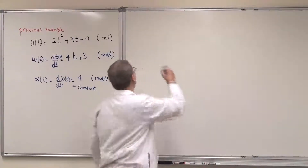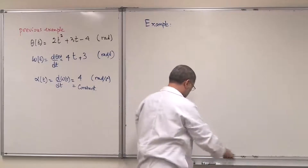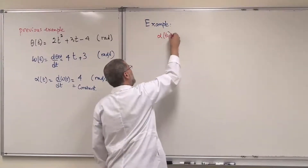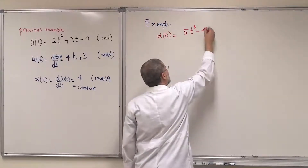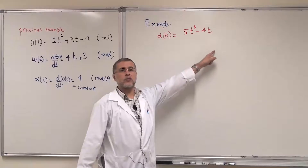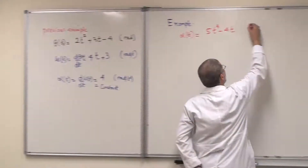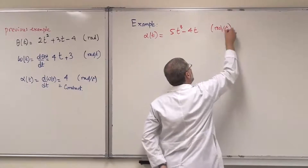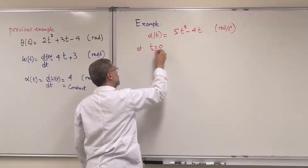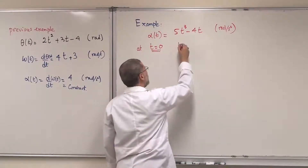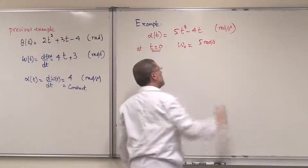Now we do another example — the opposite situation. We are given α(t) = 5t³ − 40, in radians per second squared. Notice that α is not constant here. The initial conditions are: at t = 0, ω₀ = 5 radians per second.